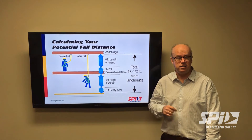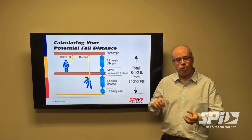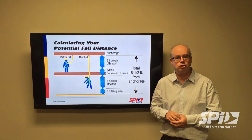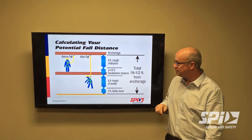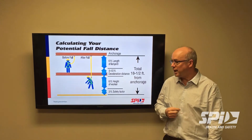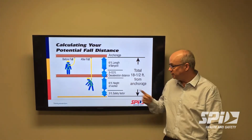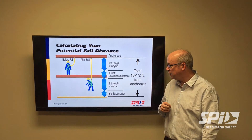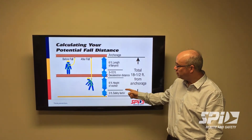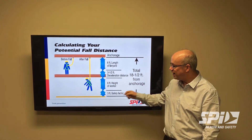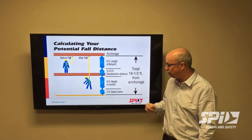We also must take into consideration the deceleration, or the deployment of the energy absorber in our system, which is essentially a braking distance. Another consideration we have to take into account is the height of the worker. In this instance we're looking at a worker of a height of six feet, and we always want to take into consideration the safety factor — in this example, three feet.